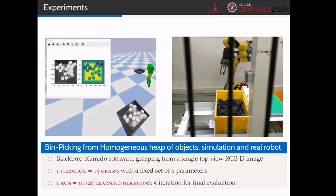We will optimize 9 continuous parameters of KAMIDO, when one trial, or iteration, consists of 15 grasping attempts. Overall, we have a very small budget for our optimization run, especially for noisy observations, with 10 initial iterations to estimate the landscape, then 20 led by Bayesian optimization.